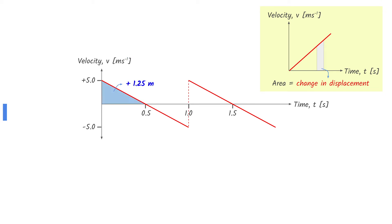In the first 0.5 seconds, the object is displaced 1.25 meters in the positive direction. In the next 0.5 seconds, the object is displaced 1.25 meters in the negative direction. And in the last 0.5 seconds, the object is once again displaced 1.25 meters in the positive direction.